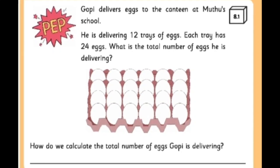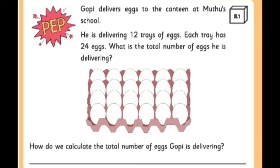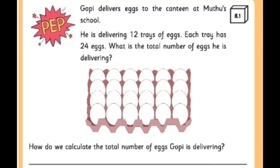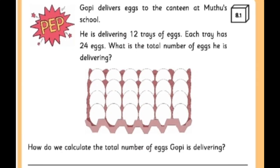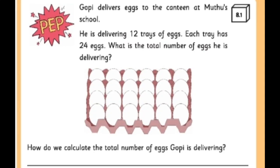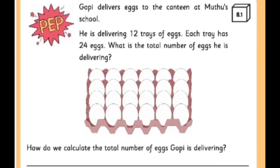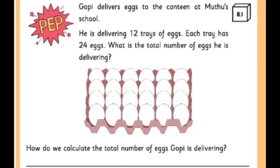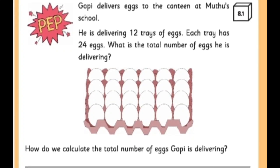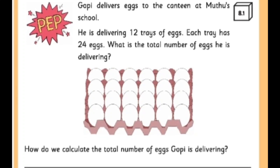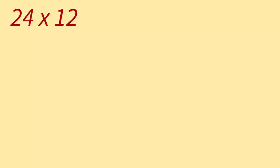Gobi is delivering 12 such trays of eggs. Since one tray has 24 eggs, two trays will have 2 times 24 eggs, three trays will have 3 times 24 eggs. Similarly, 12 trays will have 12 times 24 eggs. We could add 24 twelve times, but that is a time consuming process. Since 24 added 12 times is equal to 24 into 12, we can simply multiply and find the answer. Here we need to multiply 24 by 12 to get the total number of eggs Gobi is delivering.